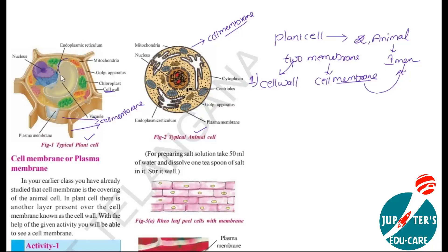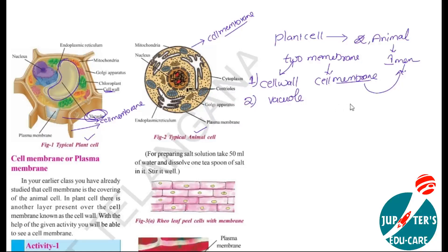And one more difference: if you observe here, a large sac-like structure is present in the plant cell. This is called a vacuole. But in the animal cell, there is no vacuole. In some animal cells, a vacuole is present, but it is very small in size.